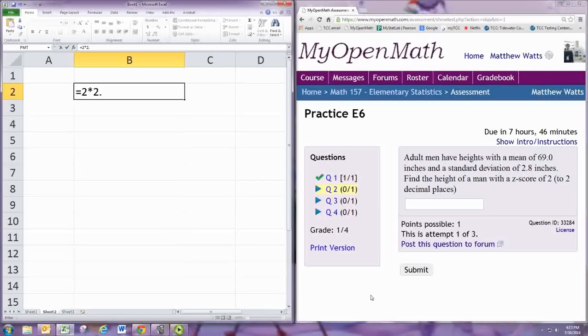So that's 2 times 2.8, and it's a positive 2, the z-score. So that means it's two standard deviations above the mean.